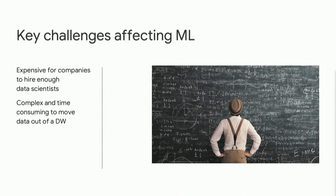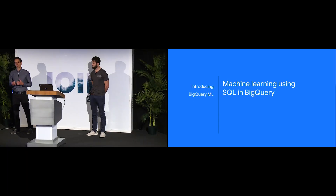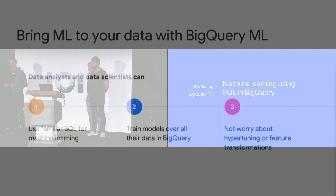We identified two fundamental problems today with machine learning and data warehouses. First, a lot of companies struggle with getting data scientists — there just aren't enough to do all the valuable machine learning tasks. Second, it's very expensive and complex to get data out of the data warehouse and use it for building models. The way we want to solve this is by introducing BigQuery ML — basically bringing machine learning using SQL into BigQuery.